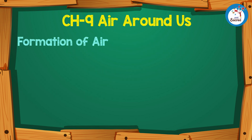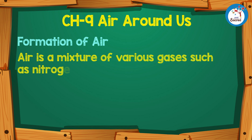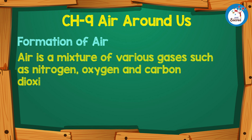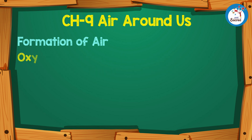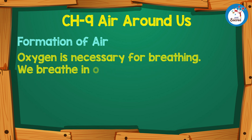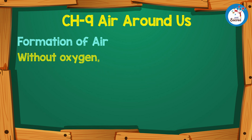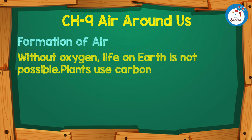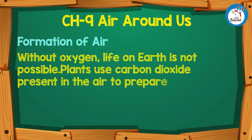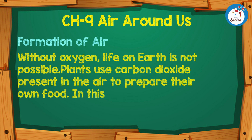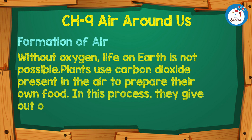Formation of Air: Air is a mixture of various gases such as nitrogen, oxygen and carbon dioxide. Oxygen is necessary for breathing. We breathe in oxygen and breathe out carbon dioxide. Without oxygen, life on earth is not possible. Plants use carbon dioxide present in the air to prepare their own food. In this process, they give out oxygen.